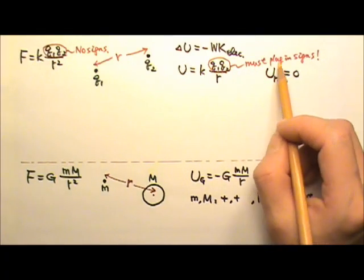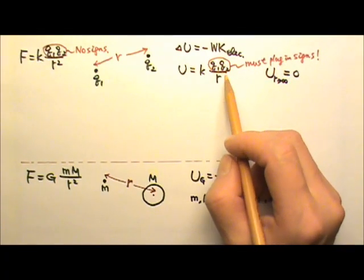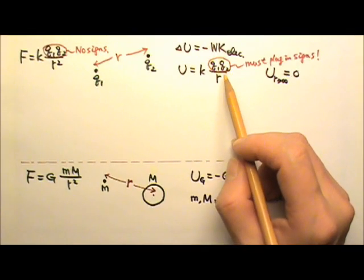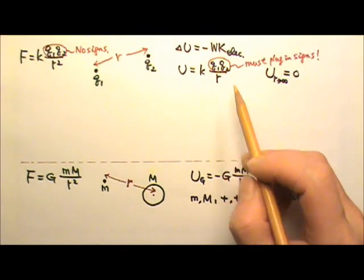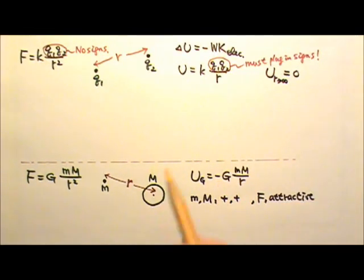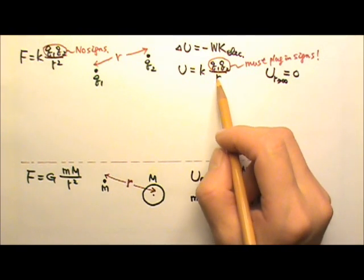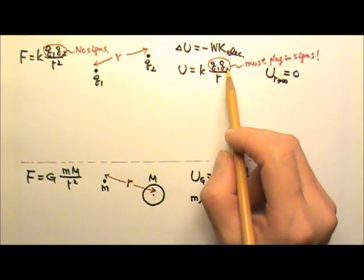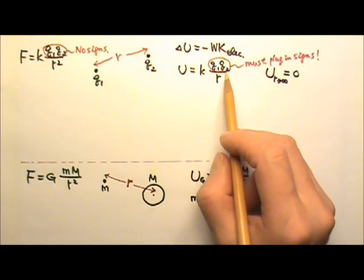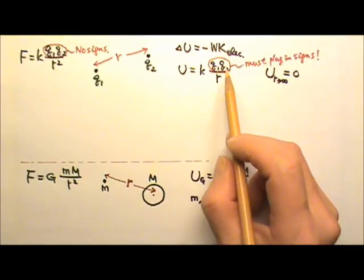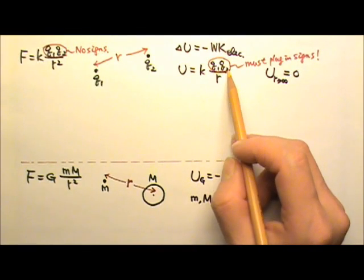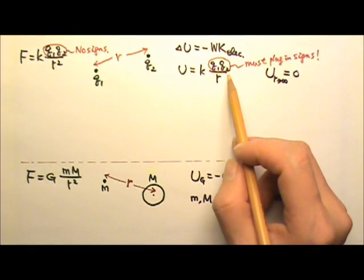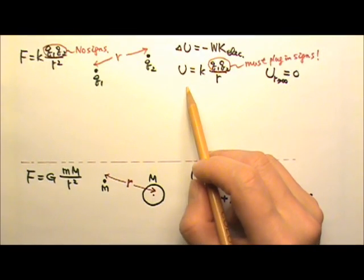And when we plug those signs into q1 times q2, we naturally get a negative potential energy, the same as this. So in the case of attractive force, the potential energy is negative. It's just that the negative sign is embedded in the q1 times q2 part. Of course, if q1 and q2 are both positive or both negative, we'd have repulsive force between the charges and positive potential energy.